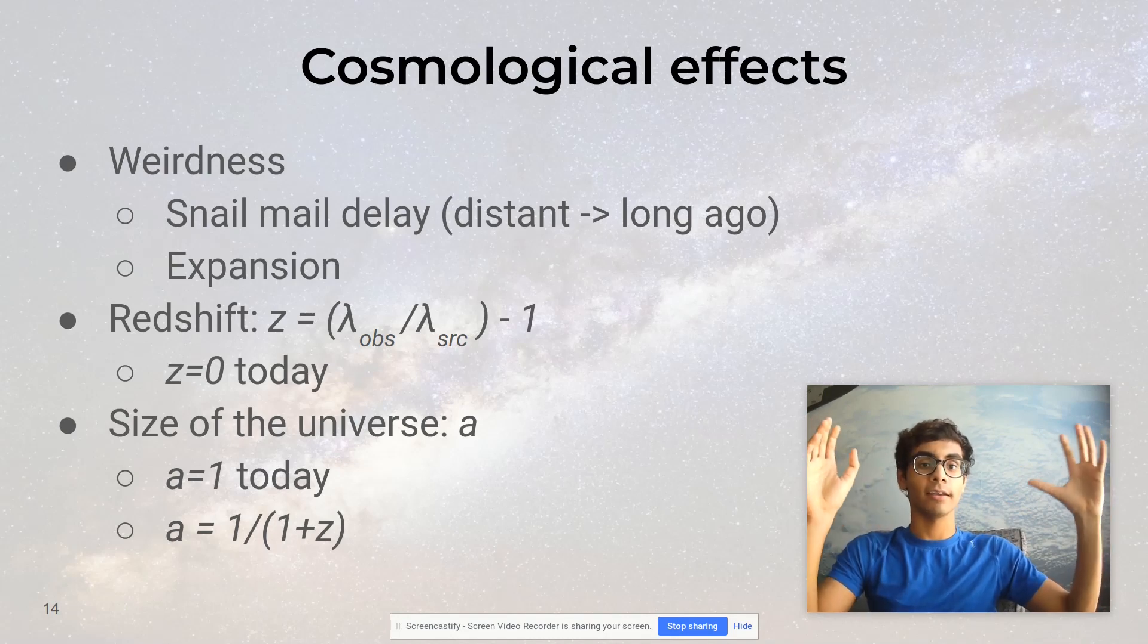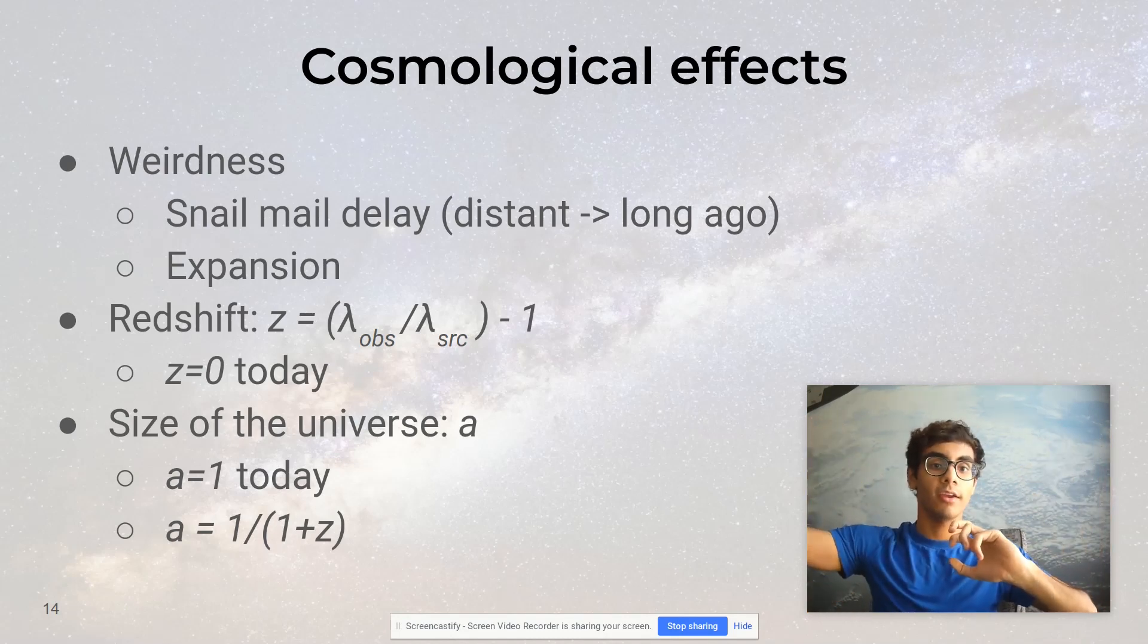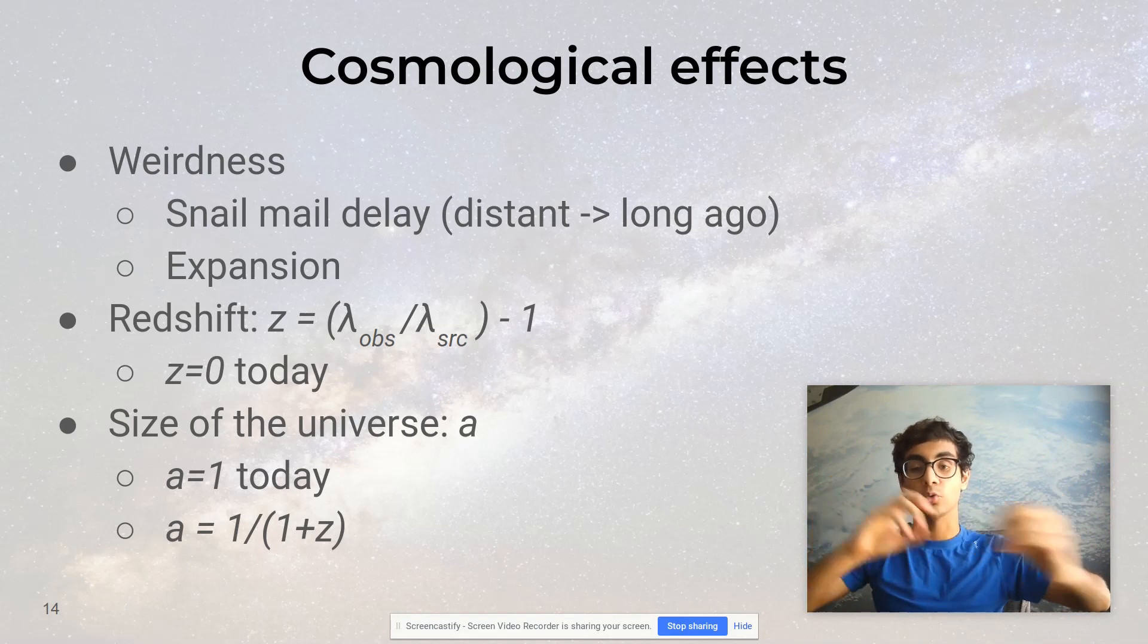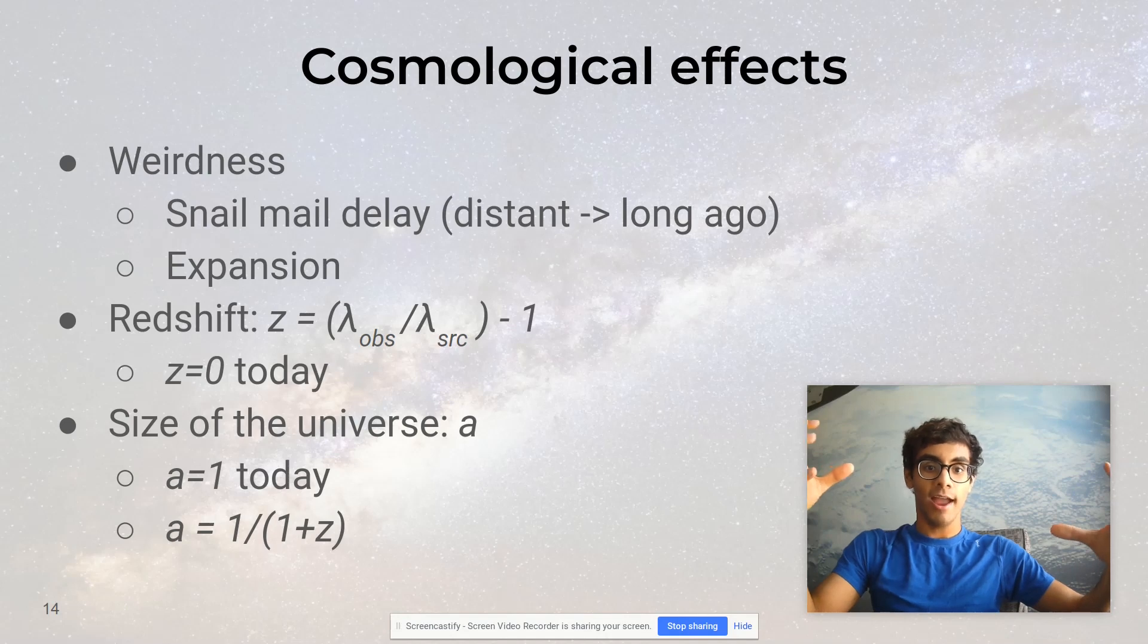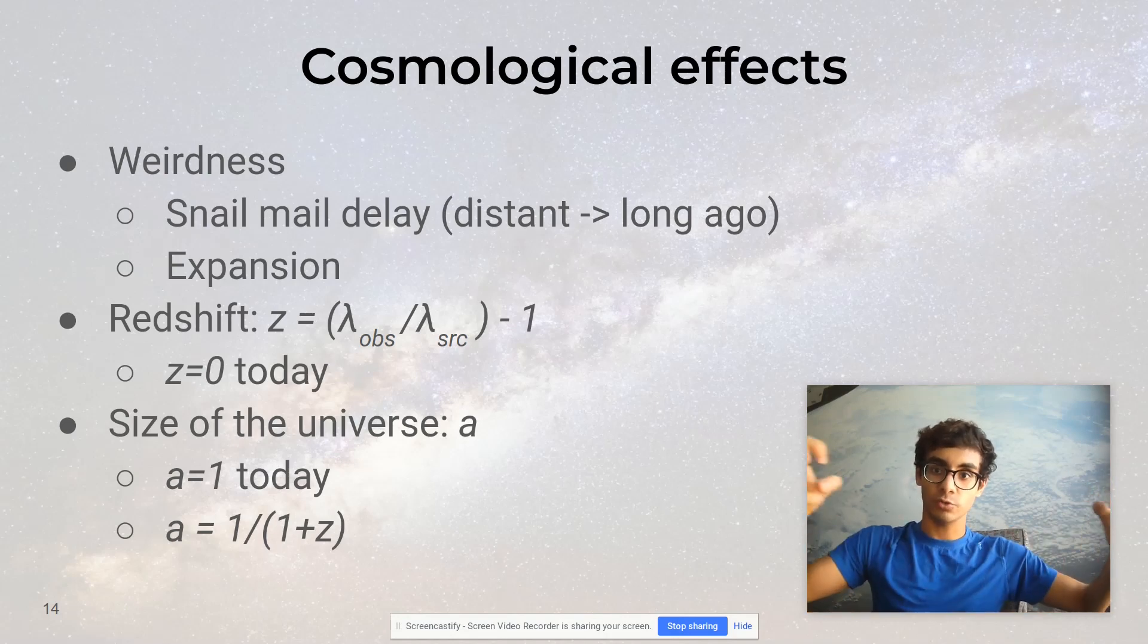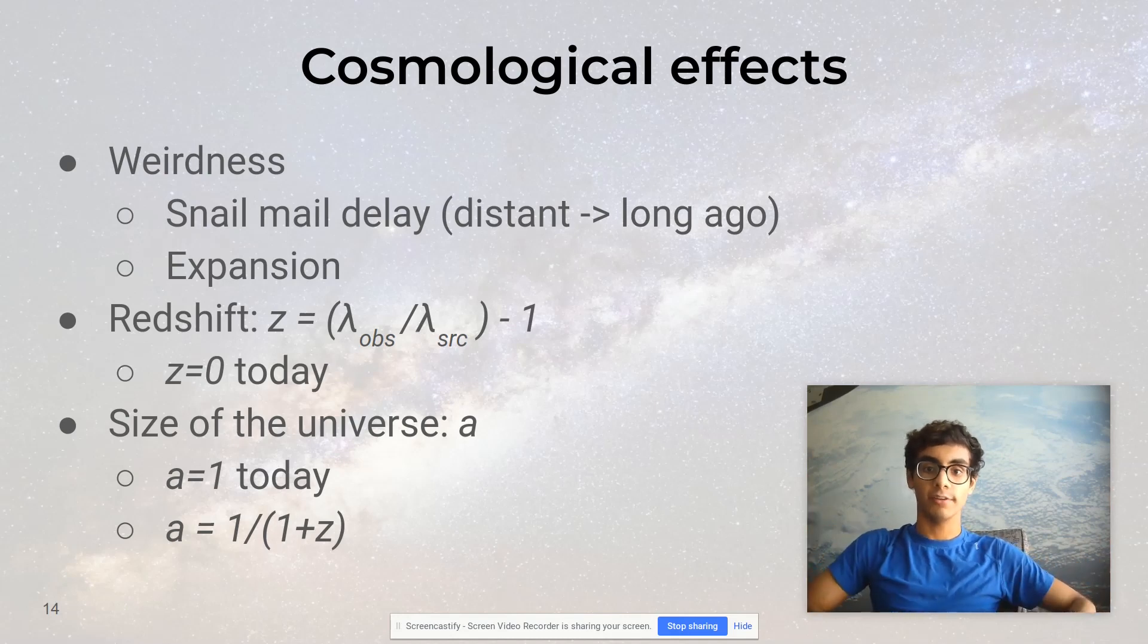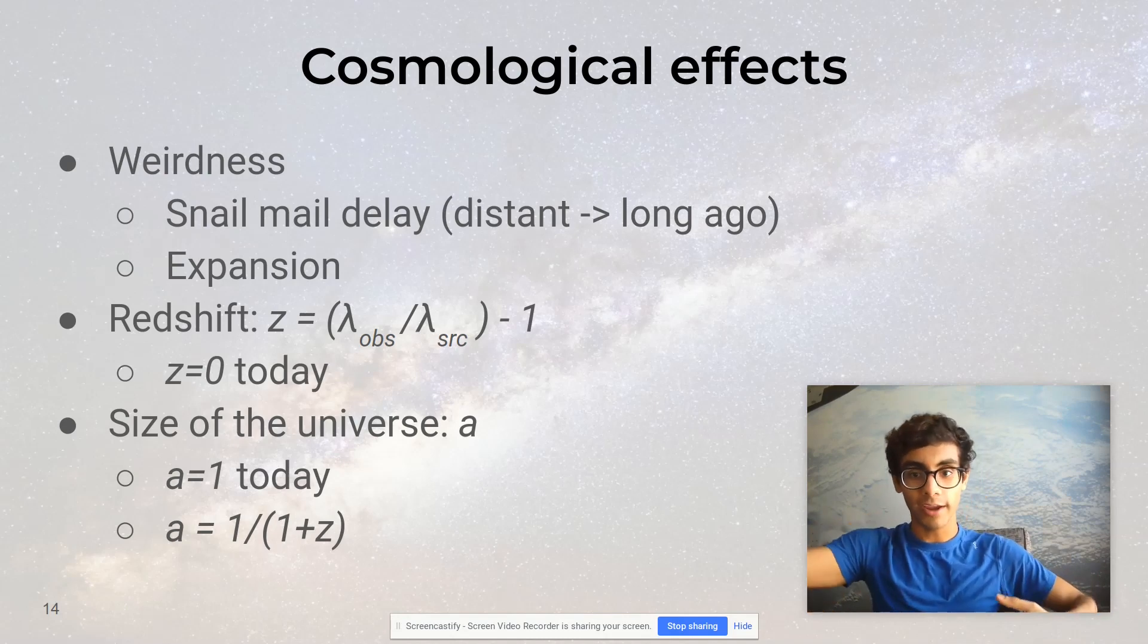But cosmological redshift actually comes about in a different way altogether. A galaxy very far away emits some light, and that light is traveling towards us. While that's happening, the space is expanding. If the light takes a long time to get to us, which is the snail mail delay, then space will have expanded a non-trivial amount, and the wavelength will have stretched with the space. The more space has expanded, the more the redshift. Also, the longer the travel time, the more expansion there is. And the further away, the longer the travel time.